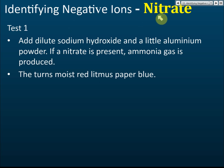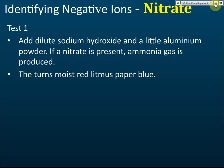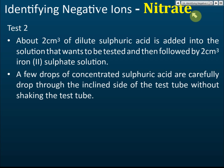Identifying nitrate — this one is harder but comes up frequently, so you must know how to test for nitrate. There are two tests. The first: add dilute sodium hydroxide and a little aluminum powder. If nitrate is present, ammonia gas is produced. Use red litmus paper to test for ammonia gas. That's the first method.